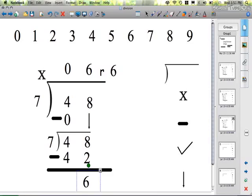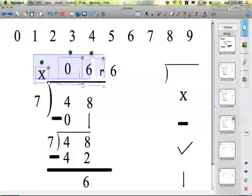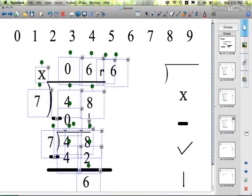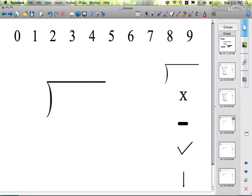Now, if you notice, this 48 and this 48, it's identical. That 0 shows that the 7 can't go into 4, and you're going to end up with the 48. Let me show you the same problem, but doing it just a tiny bit different.